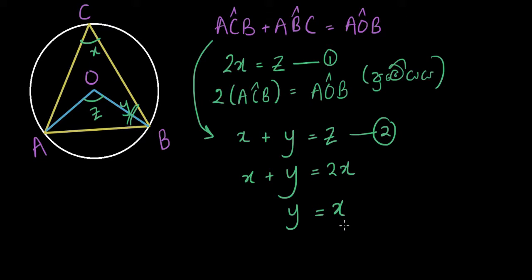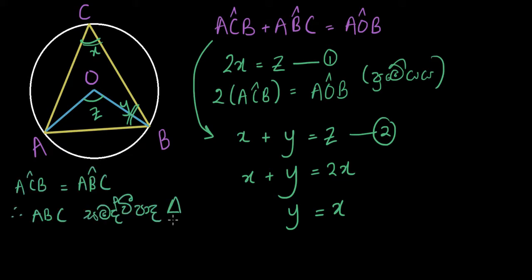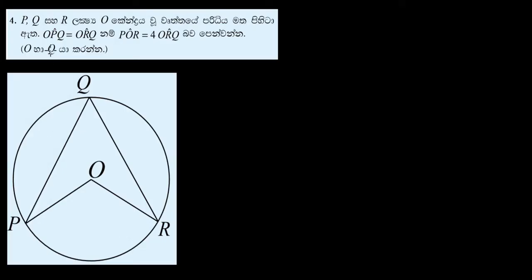We can do this — that can have x equals y. So we can have y equals z. In order to write, the angle AB should be subtracted; AB should be AC. In this case, let's say OPQ is equal to ORQ.